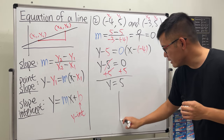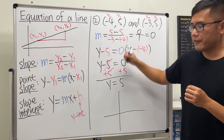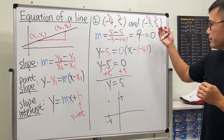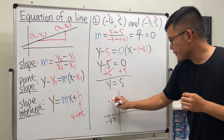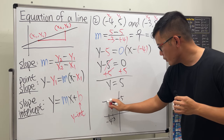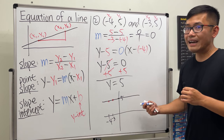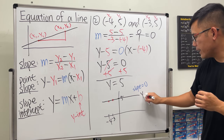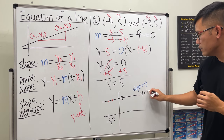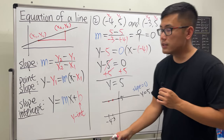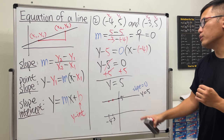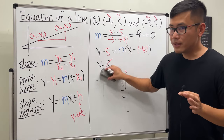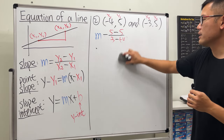This is a horizontal line. Plotting (−4, 5) and (−3, 5) and connecting the dots confirms it. When we have a horizontal line, the slope is zero and the equation is simply y = (the y-value), so y = 5. You could spot this shortcut immediately if you notice both points share the same y-value.